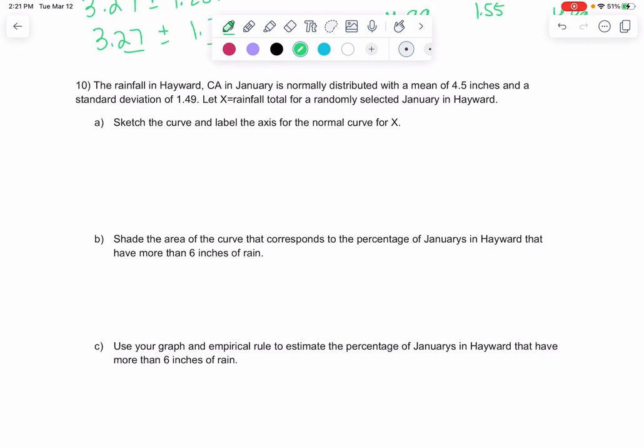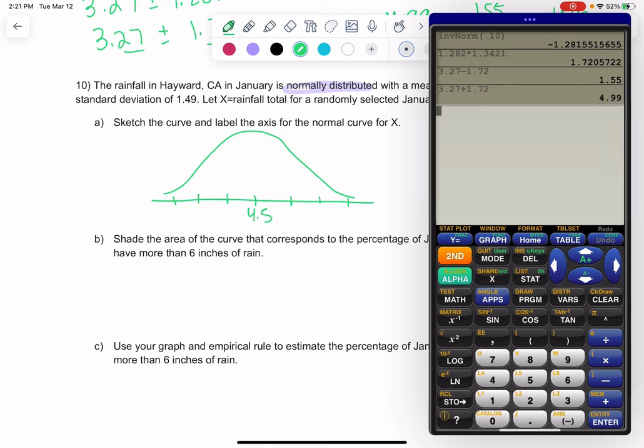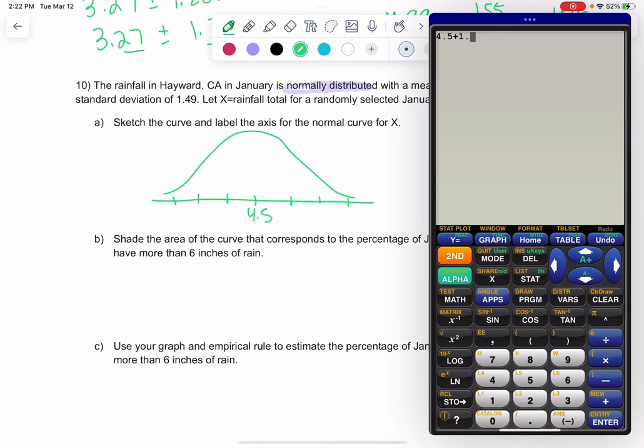Question 10, the rainfall is normally distributed. That's a hint we can use the normal curve. With a mean of 4.5 and a standard deviation of 1.49. First we want to draw the normal curve before we do anything. We're going to put 4.5 in the middle. Then we like to go 3 standard deviations in each direction. I'm going to pull out the calculator. So 4.5 plus 1.49.